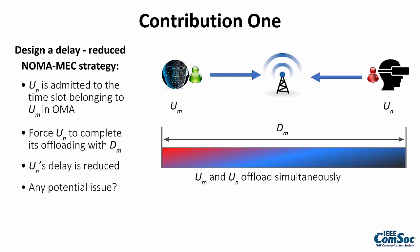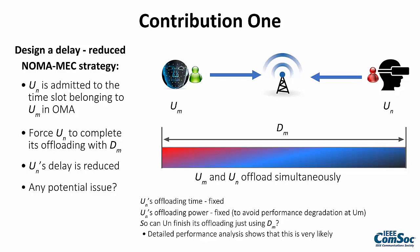However, this strategy might cause a potential issue as explained in the following. Both user 1's uploading time and uploading power are fixed in order to avoid any performance degradation at user 1. As a result, it is not guaranteed that user 2 can finish the uploading within T seconds. The paper provides a detailed analysis to show that the probability for successful uploading can approach one at the highest level.